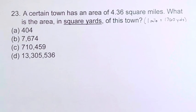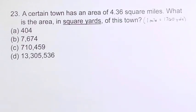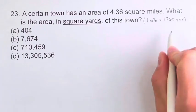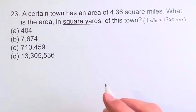So what we need to do here is a unit conversion from square miles to square yards. And we're given that a mile is equal to 1760 yards, so you'd think that you could just multiply these two together, but we do have to do an extra step.